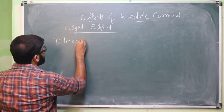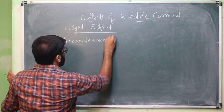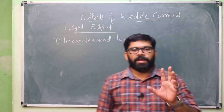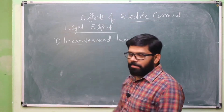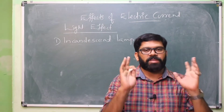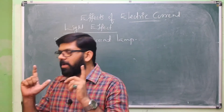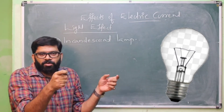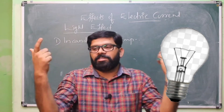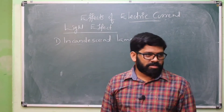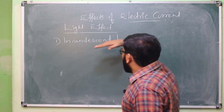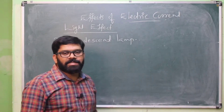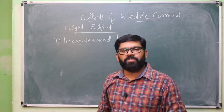The first topic is the incandescent lamp. Incandescent lamp, or we can say filament lamp. The word incandescent means glowing with the help of heat. When electricity is passed through, heat energy is produced and it is converted into light — glowing with the help of heat. This incandescent lamp is also known as a filament lamp.